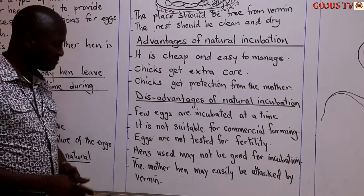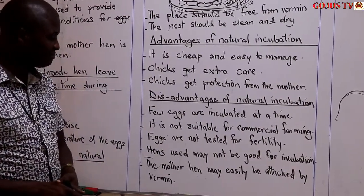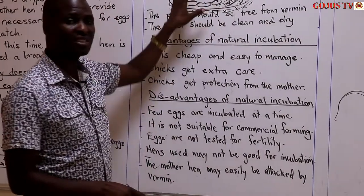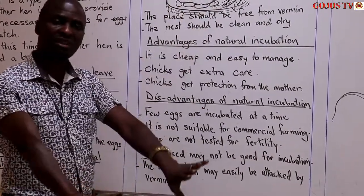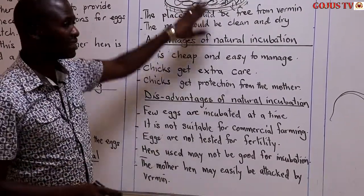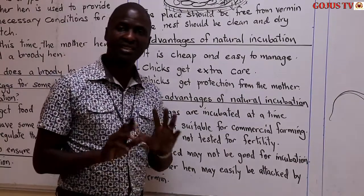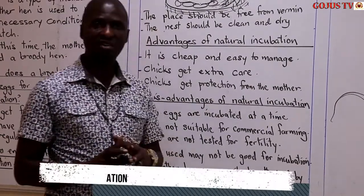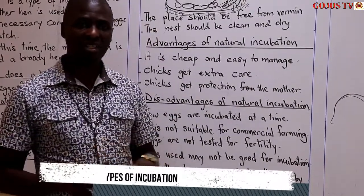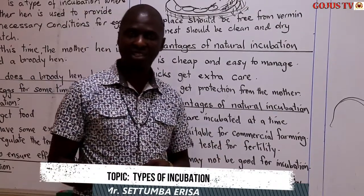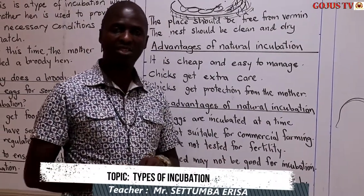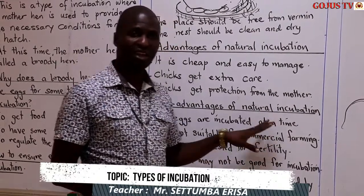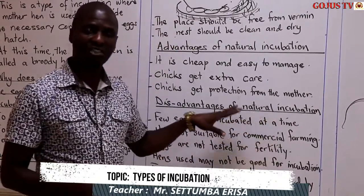Lastly, the mother hen may easily be attacked by predators. Because the mother hen is seated in one place, it may not have enough protection and can easily be attacked. Thank you very much, dear children, for being attentive during this lesson. I want to send you to your workbook — check page 28 and page 29. There is some activity to be done. God bless you.